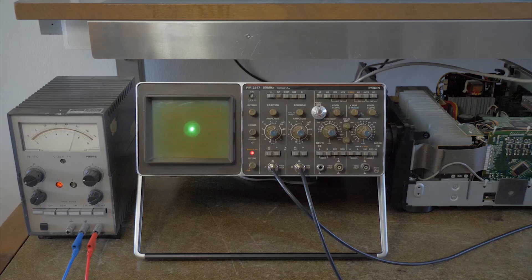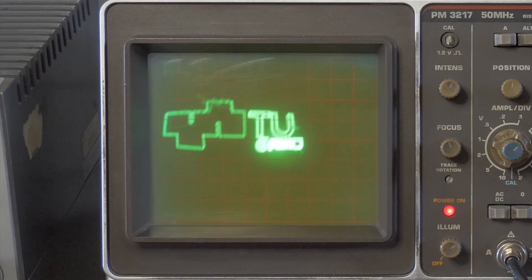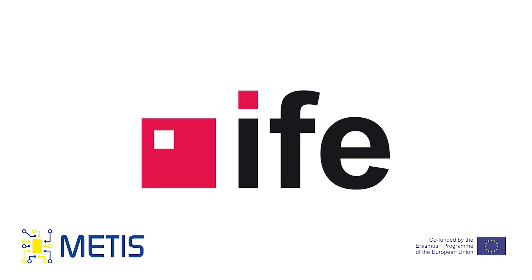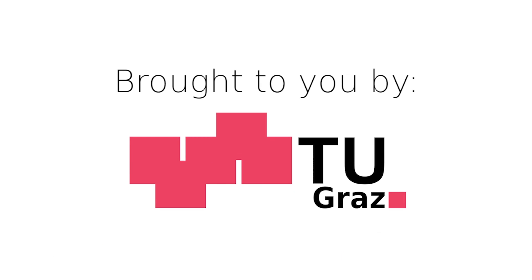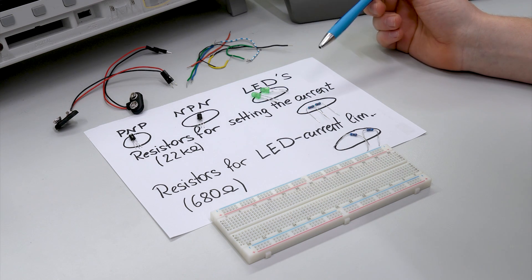It only consists of four components for single supply or eight components for dual supply. So let's have a look at all the components we need for our circuit.